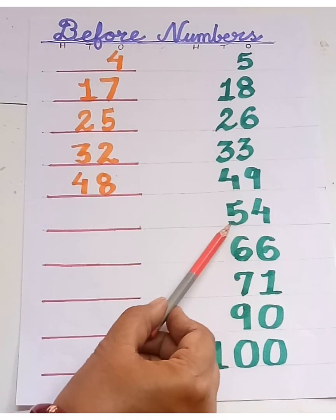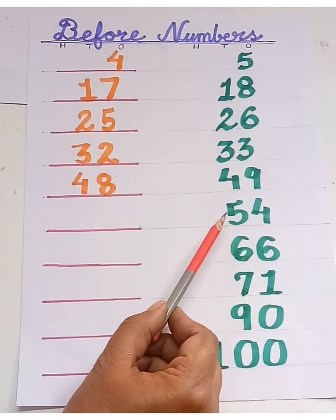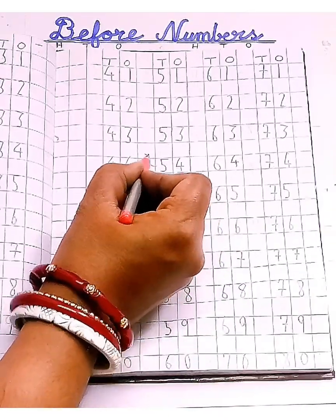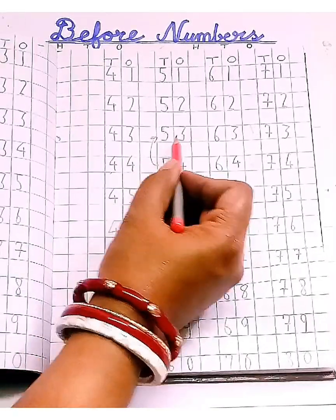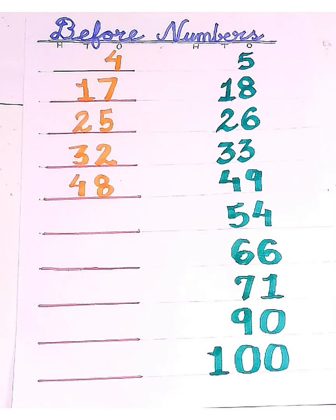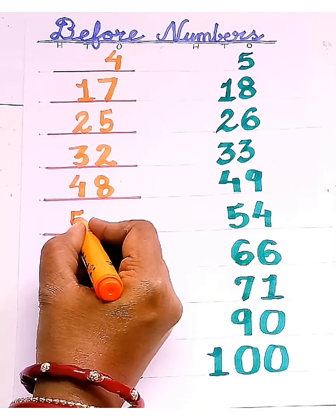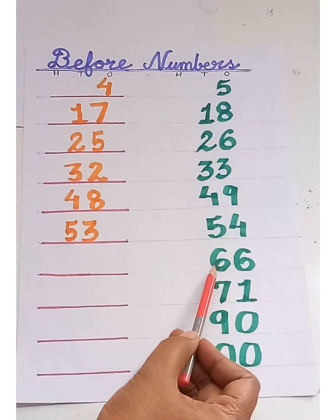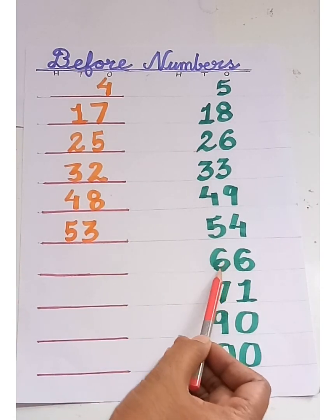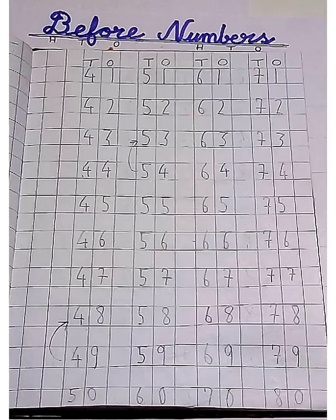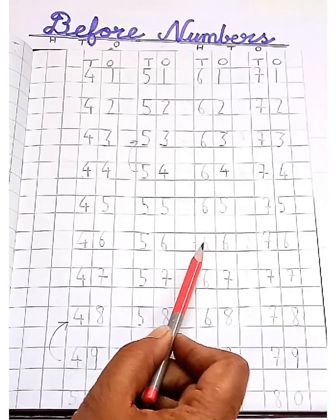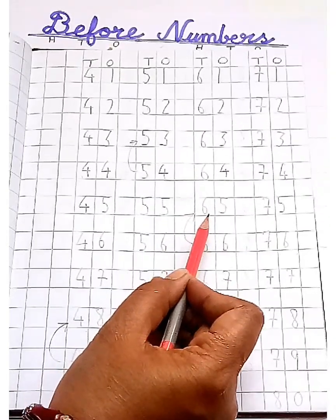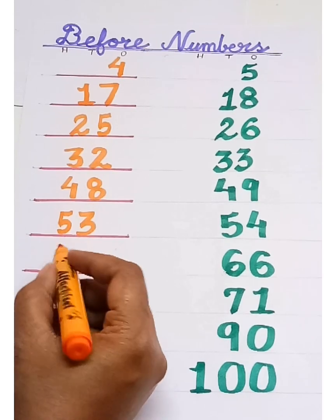Now tell me children, which number comes before fifty-four? Let's count backward from fifty-four. Fifty-four and then fifty-three. Let's write fifty-three. Fifty-three comes before fifty-four. Now tell me children, which number comes before sixty-six? Let's count backward from sixty-six. Sixty-six and then sixty-five. Let's write sixty-five.